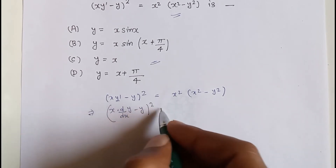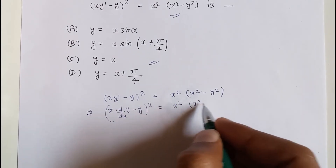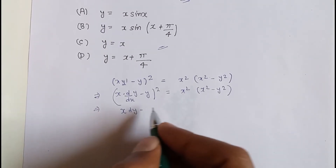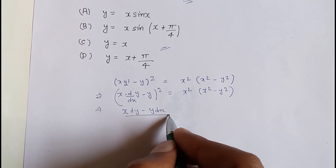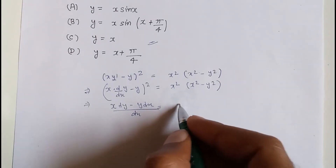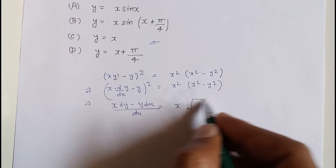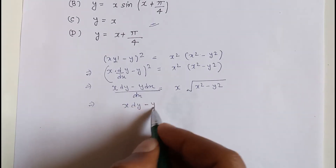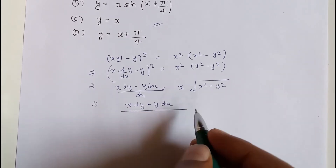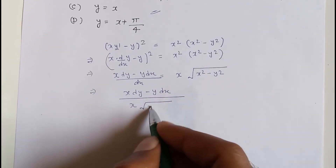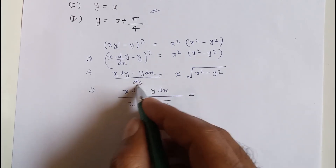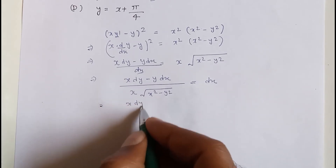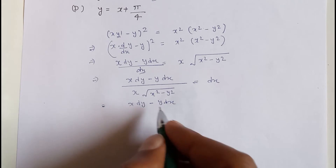We can rewrite this as (x·dy - y·dx)/dx equals x times the square root of x² minus y². Rearranging: (x·dy - y·dx) divided by (x·√(x² - y²)) equals dx.